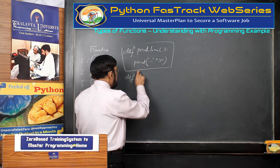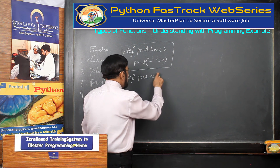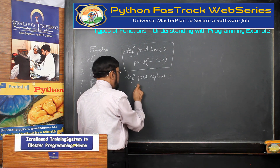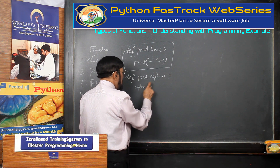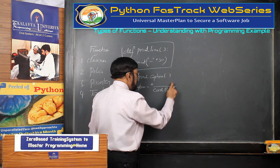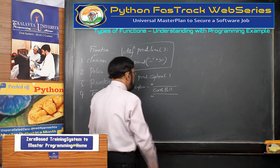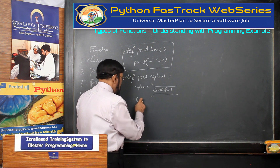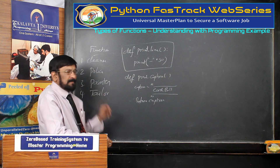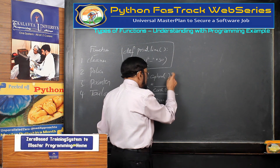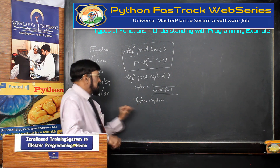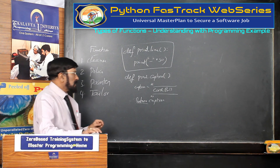Here, def print_caption — I am not giving any arguments. What I am doing here is writing a caption as a multi-line string — a cash bill. Then we write return, returning that multi-line string. So this is the second type of function: a function which does not take any argument but returns a value.